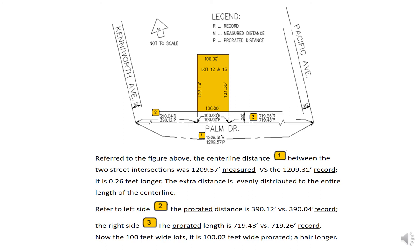Note that proration does not change the record distance of a recorded tract map. The party chief normally takes multiple measurements and then averages them. Another important thing to remember is that the width of the street is not subject to proration. All surveyors know about this rule, but no one has an answer as to where the rule comes from — if you know, please leave a message below.